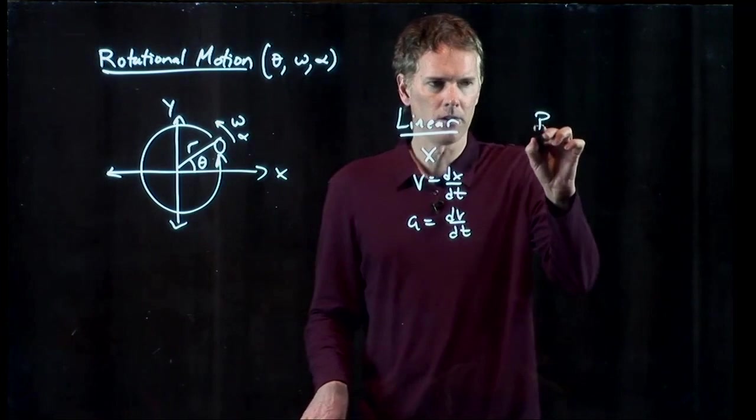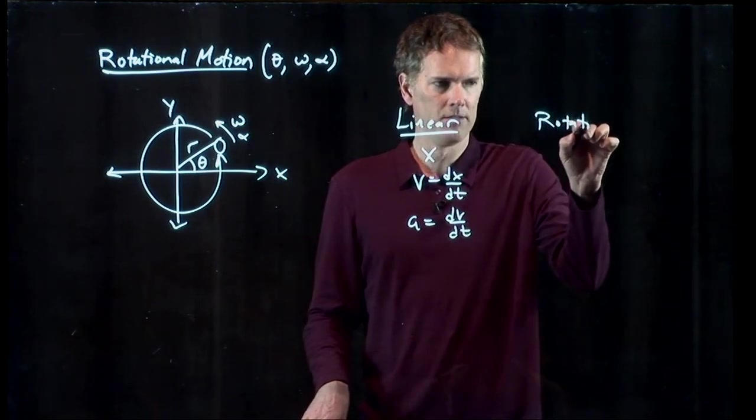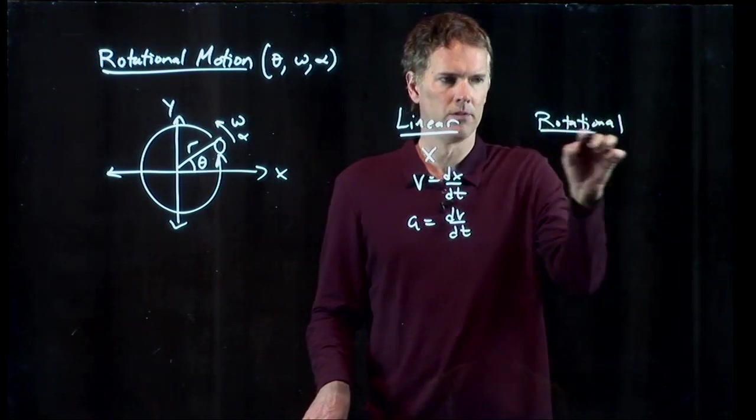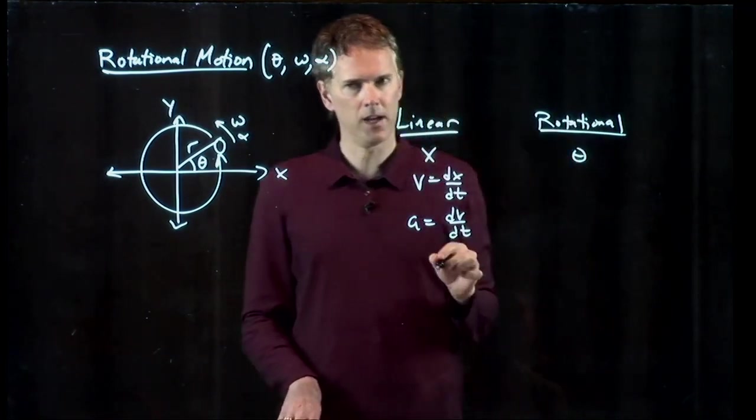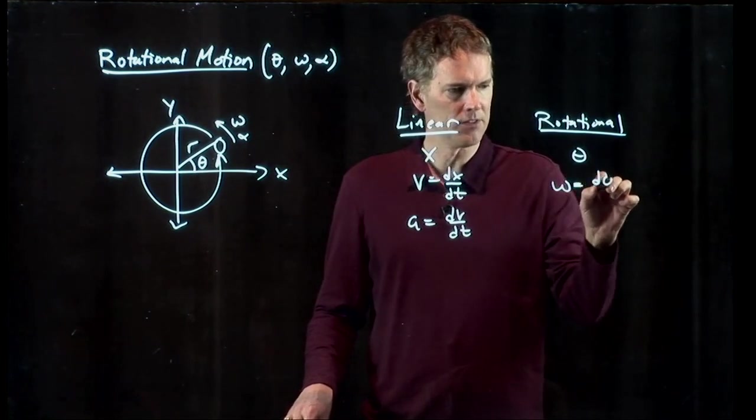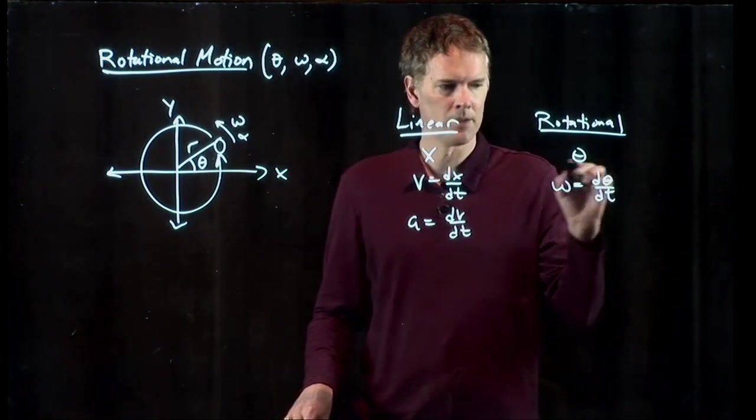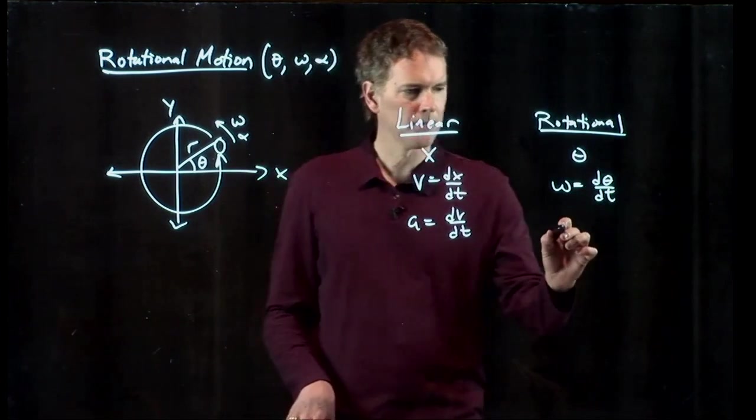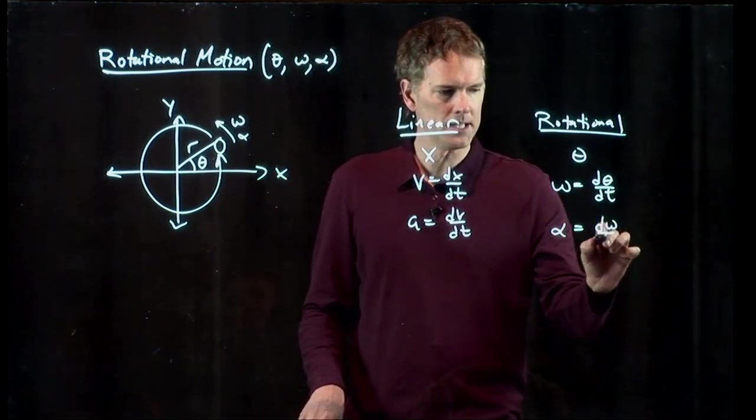And now in rotational, we're going to do the same stuff, just change the variables. So instead of x, we're going to use theta. What's omega? Omega is dθ/dt. What is alpha? Alpha is dω/dt.